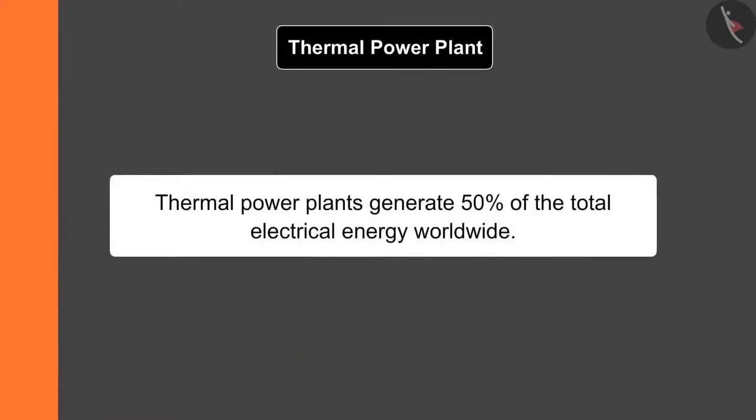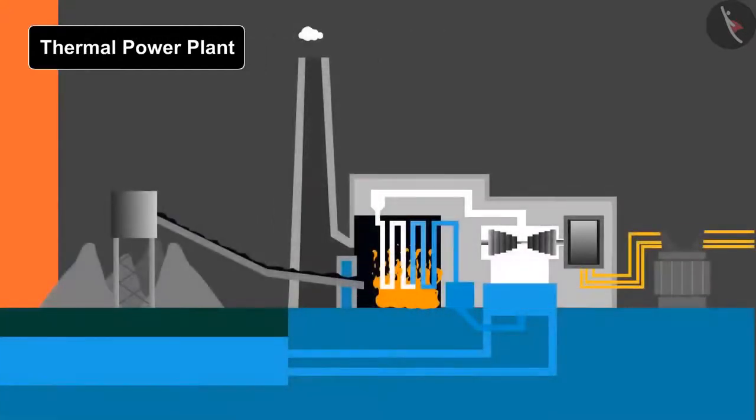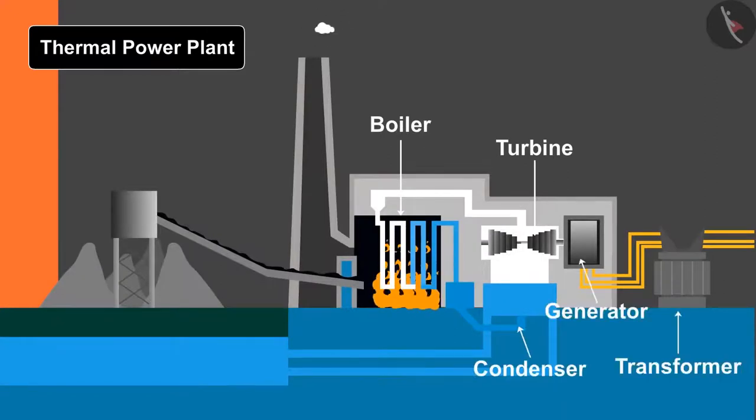Let's understand the thermal power plant closely. Thermal power plants generate 50 percent of the total electrical energy worldwide. It has majorly five components: boiler, turbine, condenser, generator, and transformer.